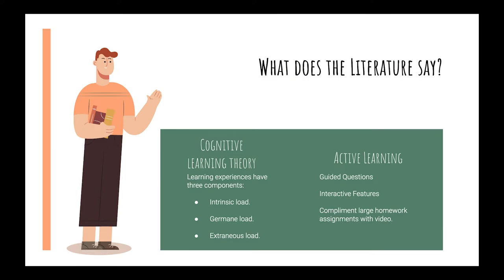What does the literature say? Cognitive learning theory is based around three components. Intrinsic load, which is inherent to the subject under study and is determined in part by the degrees of connectivity within the subject. Germane load, which is the level of cognitive activity necessary to reach the desired learning outcome. For example, by the end of this video, you will hopefully have met all the learning objectives — the cognitive activity spent learning enough to meet those objectives is the germane load.